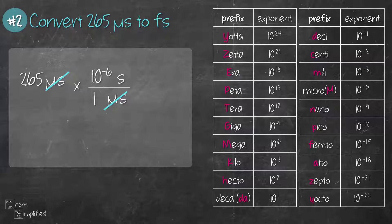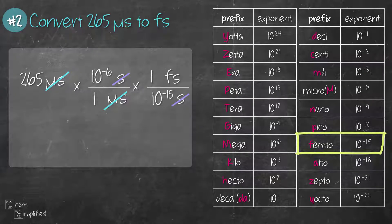So we multiply, place S at the bottom and then we place femtosecond at the top because that's what we need to find. From the prefix table, 1 femto is 10 to the negative 15. So we place that and we solve the math. 265 times 10 to the power of negative 6 divided by 10 to the power of negative 15, and that works out to be 2.65 times 10 to the power of 11 femtoseconds.